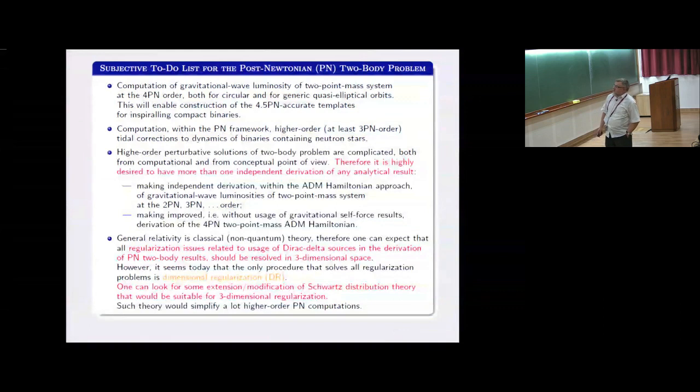In this period, for example, it would be useful to make independent derivation, within the idea of Hamiltonian approach, of high-order gravitational wave luminosities for two-point mass systems. As far as I know, the third post-Newtonian luminosity was computed only once. Am I right? Yes.